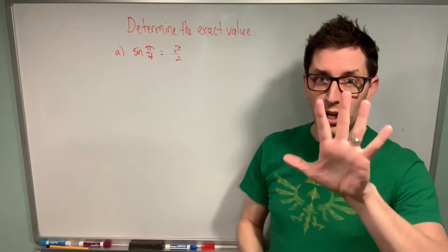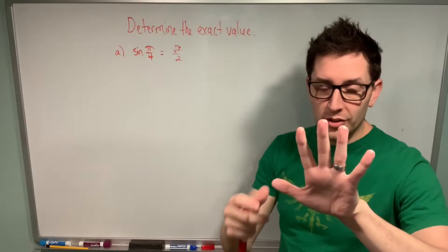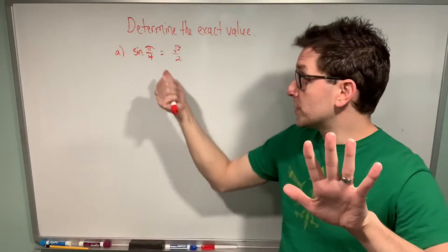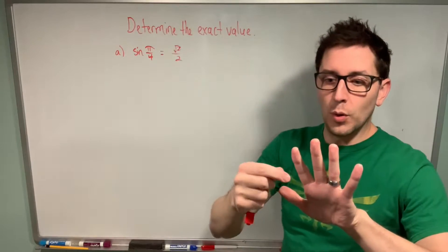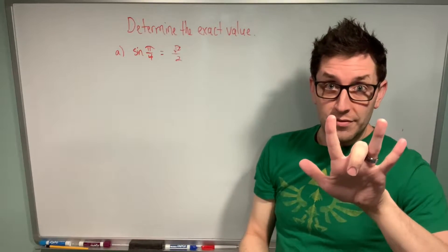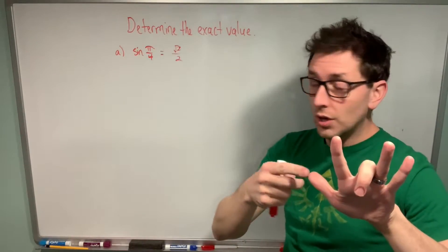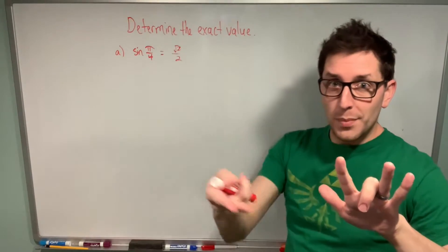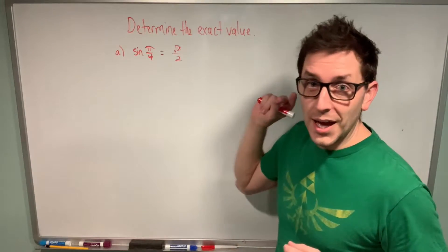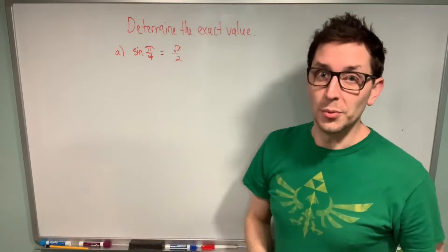Now to use the special hand trick, you're going to take your left hand and label each finger with all the special angles. You start at zero, then 30, 45, and so on. For this problem we're working with pi over four, which is 45 degrees. So you put that 45 degree finger down and look to the left of that finger. In this case I have two fingers left, so I take the square root of two, put that in the numerator, and divide by two to get the exact value of sine pi over four. I absolutely love this trick — if you haven't watched that video, be sure to check it out because it is completely mind blowing.